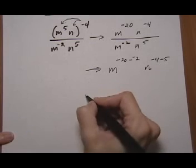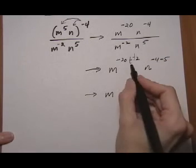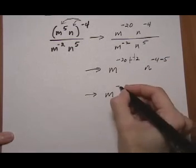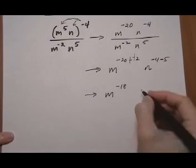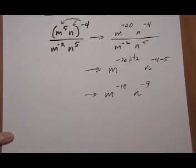So if we do out the math, we get m to the minus 20 minus minus 2 is the same as minus 20 plus 2. So m to the minus 18. n to the minus 4 minus 5 is minus 9.